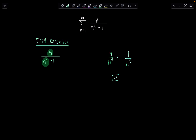What do we know about the sum n equals 1 to infinity of 1 over n cubed? It converges because it's a p-series and p equals 3, which is greater than 1. When we use the direct comparison test, we need to show that the terms of our series are smaller than the terms of some other convergent series if we want to say that this series converges as well.